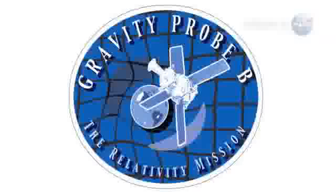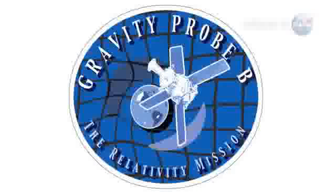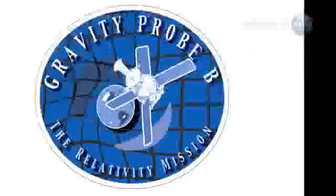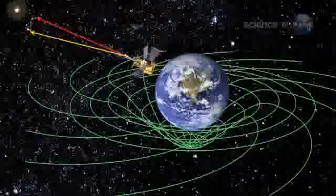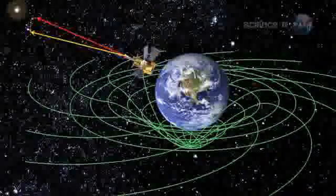On May 4, 2011, researchers announced that NASA's Gravity Probe B spacecraft has detected the vortex, and its shape precisely matches the predictions of Einstein's theory of gravity.